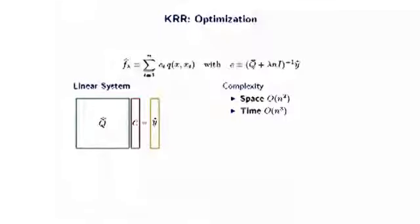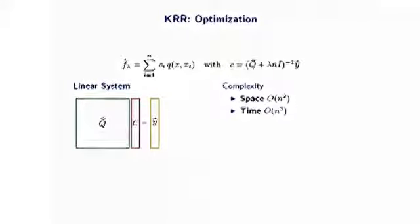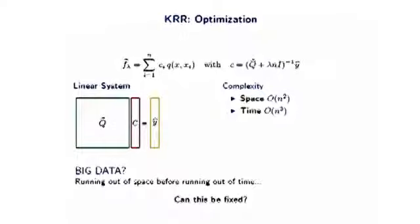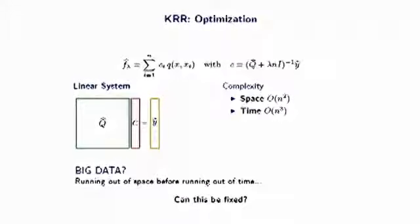We have seen that kernel ridge regression has optimal statistical properties and a quite complete statistical analysis. What about computation? Finding the coefficients requires solving a linear system, which takes N-squared in space — to build the kernel matrix — and N-cubed in time in the worst case, to invert it. Unfortunately, this algorithm is not suitable for big data despite its excellent statistical properties.